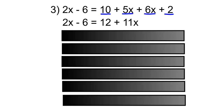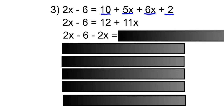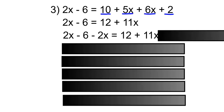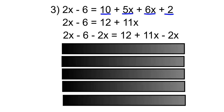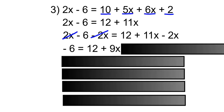Next, remove the 2x from the left-hand side by subtracting 2x from both sides. So 2x minus 6 minus 2x equals 12 plus 11x minus 2x. The positive and the negative 2x will cancel, leaving us with negative 6.